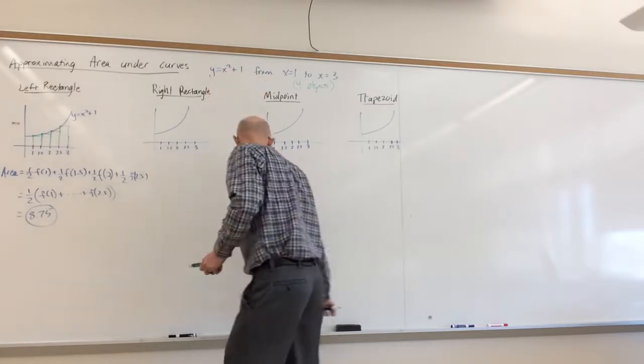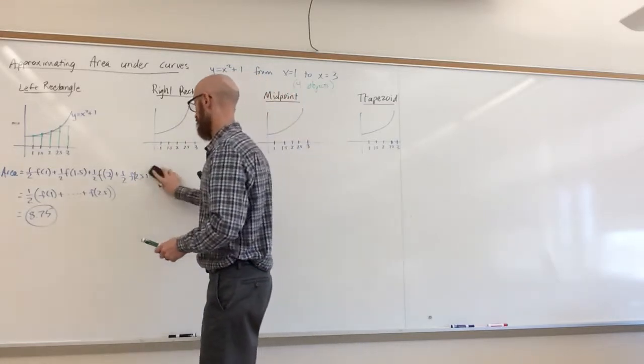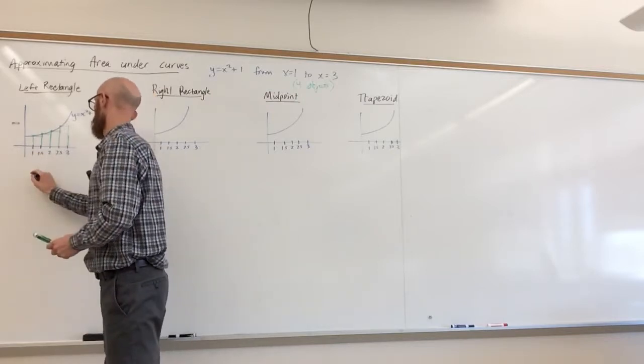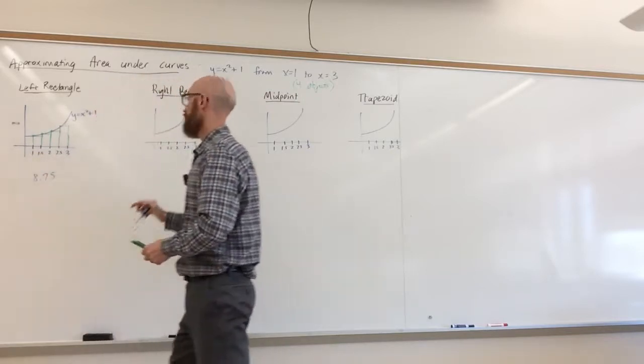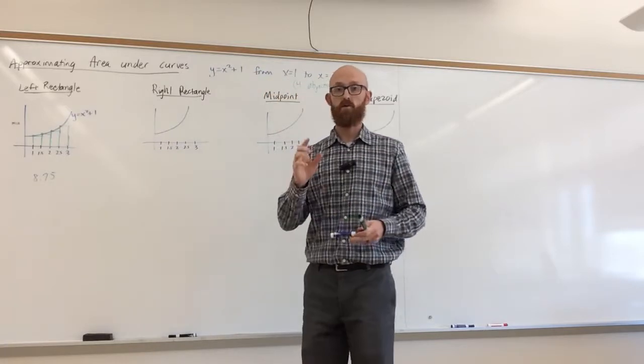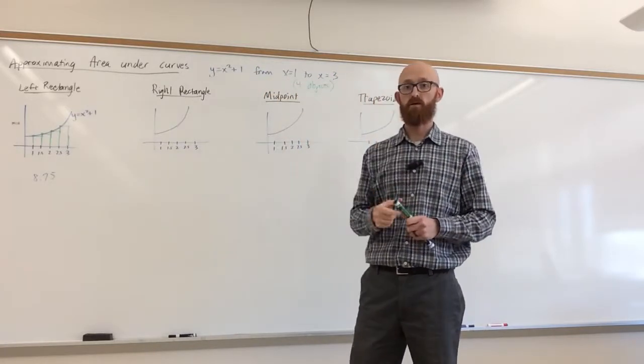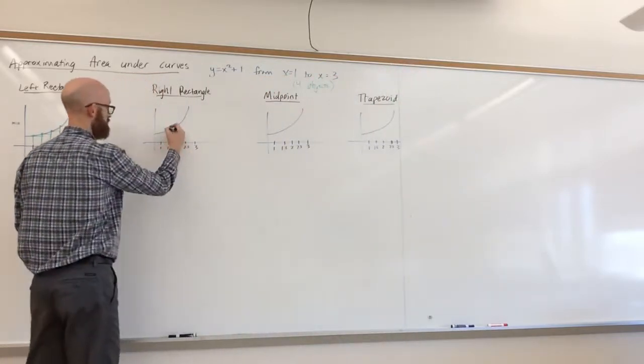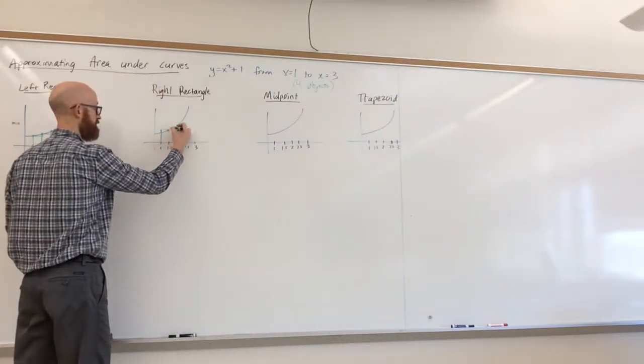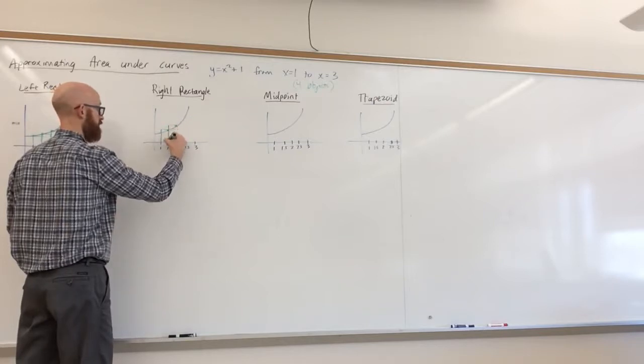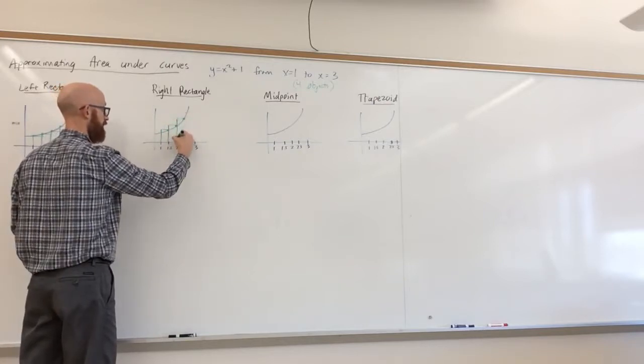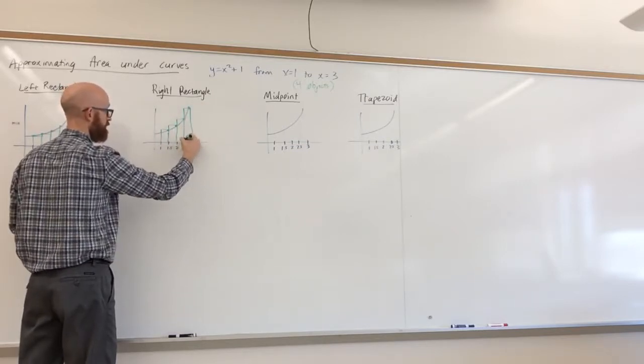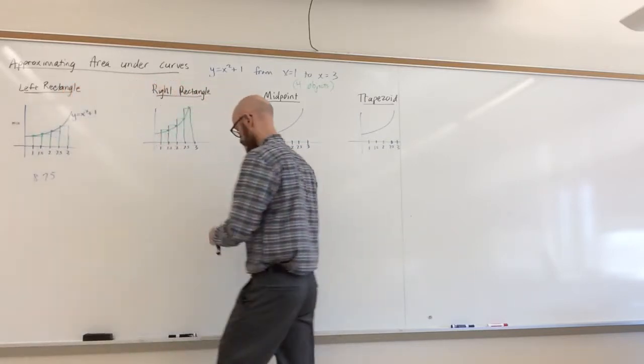Now for right rectangles. I'm just going to make some space here. For right rectangles, we're going to draw our rectangles in a way that has the right edge of the rectangle determining its height. So the first rectangle will start at 1.5 and go over, then at 2 and go over, at 2.5, and then the last one is corresponding to 3.